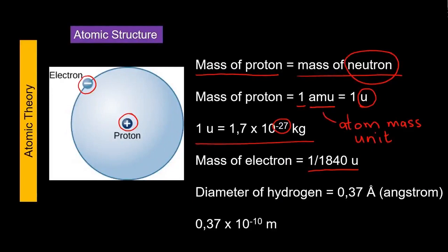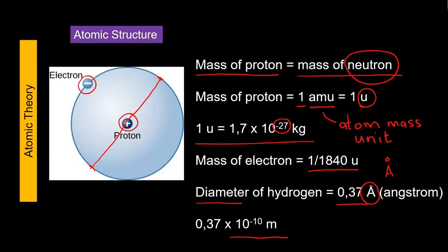We can see that the mass of an atom is dependent on the mass of the proton — electrons don't have much say in the mass of atoms. What about diameter? The diameter is the distance from one edge to the other of a sphere. The diameter of hydrogen is given as 0.37 angstroms — written as a capital A with a small circle on top — which equals 10⁻¹⁰ meters. That is also frightfully small. I think it is time for a break.